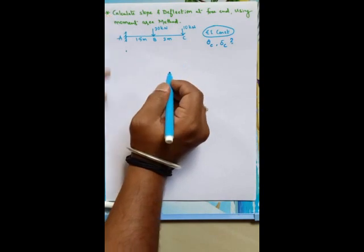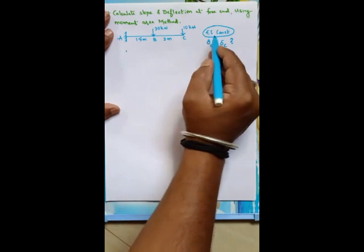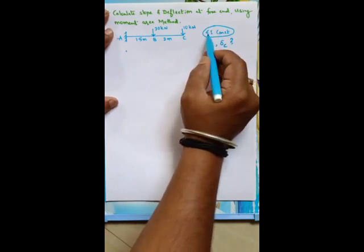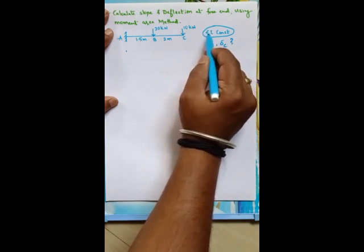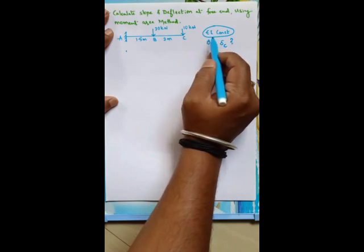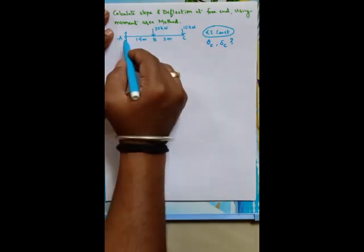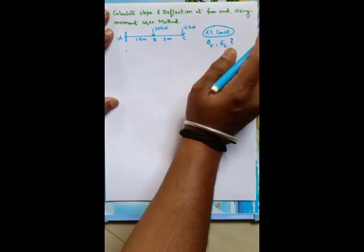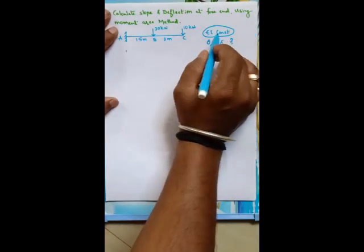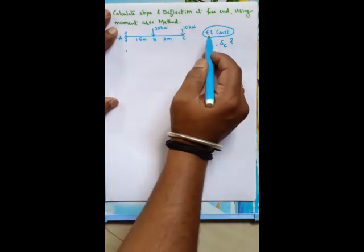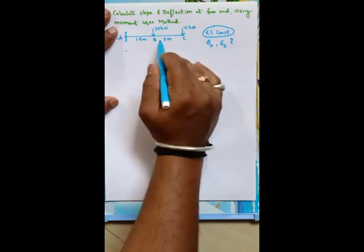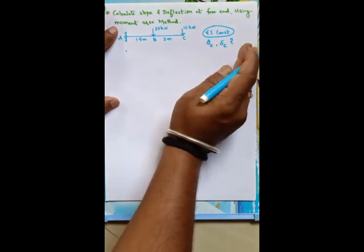We will be drawing the M/EI diagram, so we require EI, where E is Young's modulus of elasticity and I is moment of inertia — these are called elastic constants. Their product EI is called flexural rigidity. Here EI is constant throughout. If they had mentioned 2I or 3I for different portions, we would need to consider them appropriately.